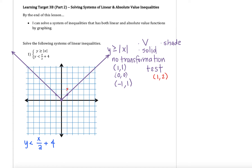If I test (1,2), I can do that because it's not on my boundary line. I'm going to sub that into my inequality, making sure to sub in the 2 for the y value. I'm asking myself: is 2 greater than or equal to the absolute value of 1? That is a true statement — 2 is greater than or equal to 1. Since that is a true statement, we want to shade where that point is.